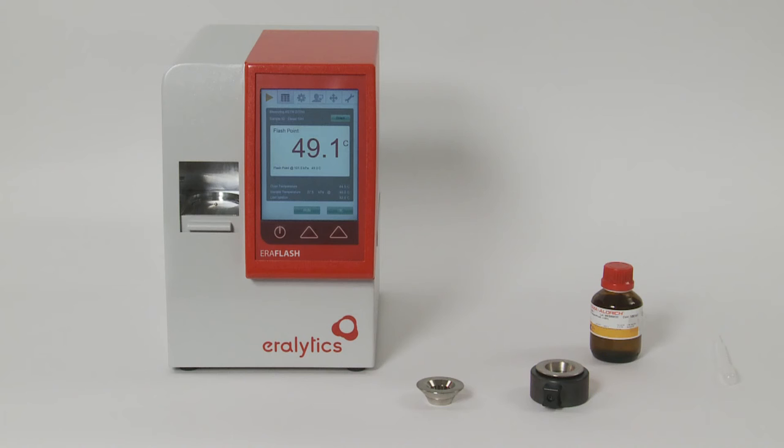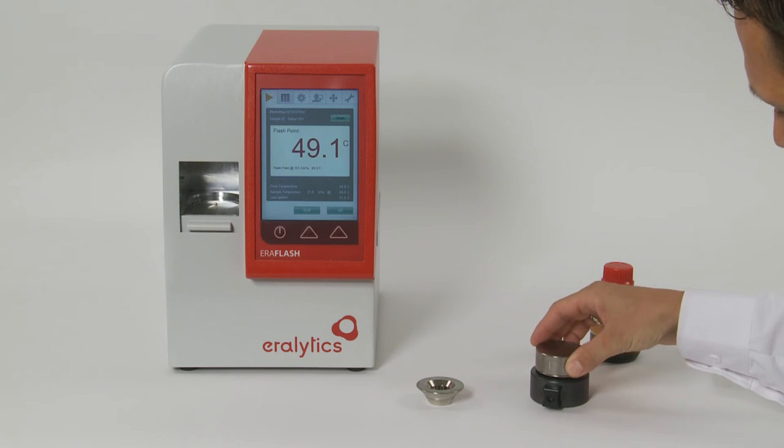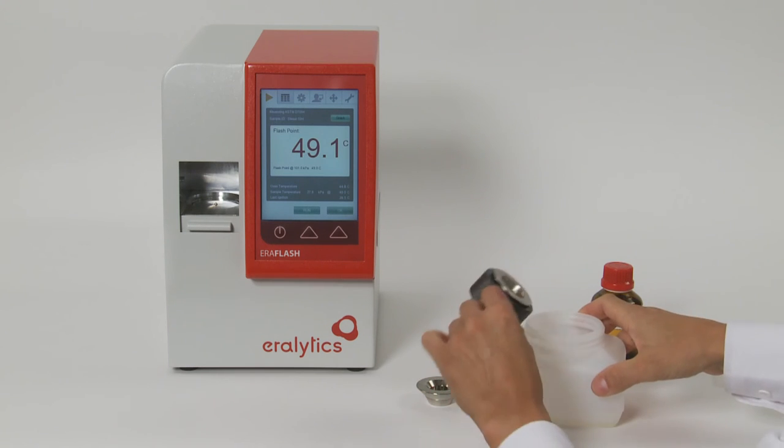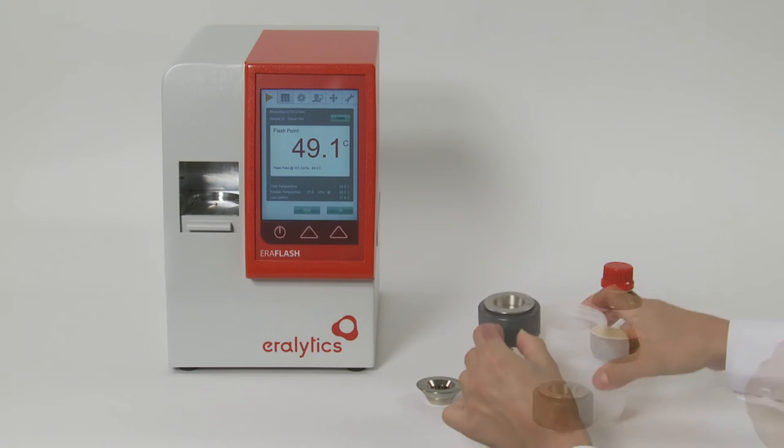After high temperature measurements, cool the sample cup with the optional cooling block. Take out the stirring magnet, empty the cup, and clean it with a tissue.